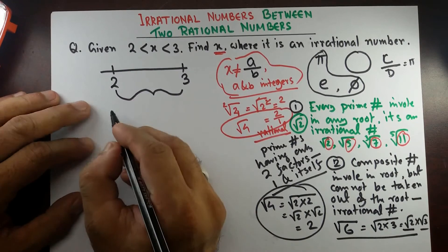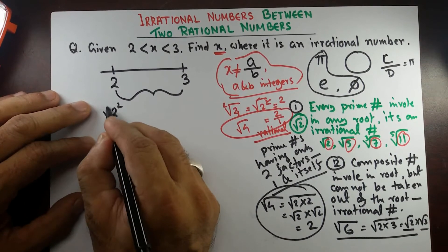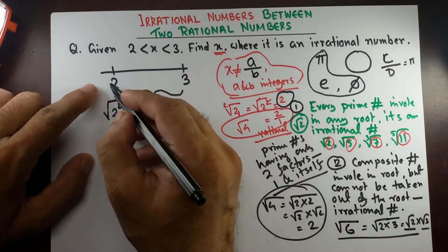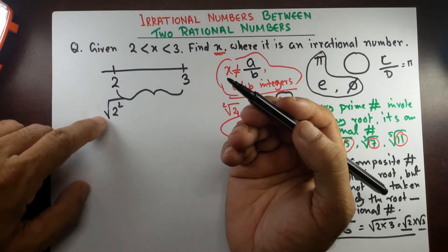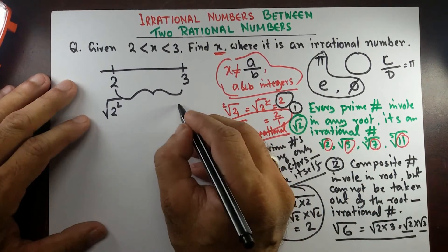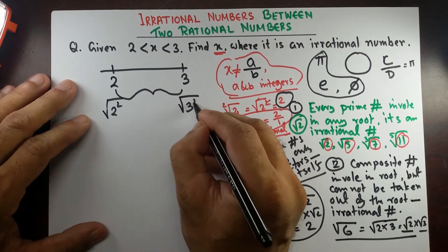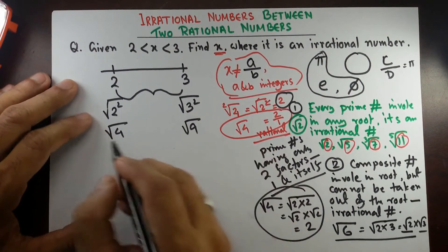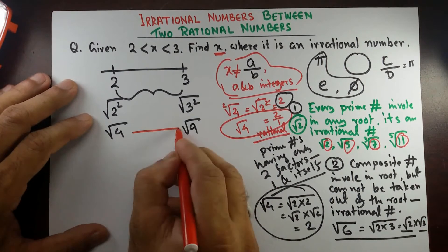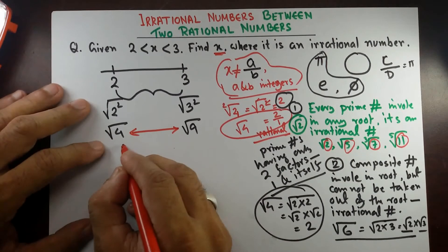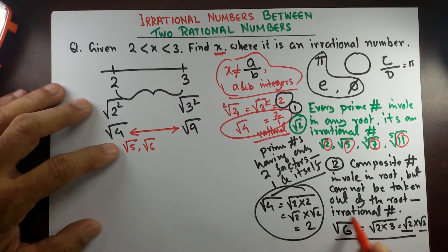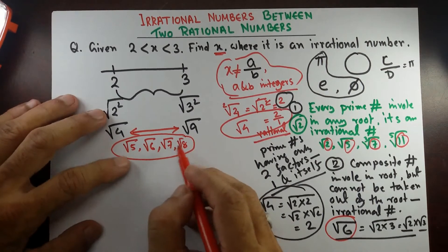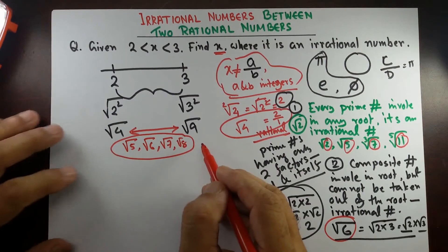Based on this, we can write 2 as the square root of 2 squared, which is square root of 4. Similarly, we can write 3 as square root of 3 squared, which is square root of 9. So, every integer value between square root 4 and square root 9 — think about square root 5, square root 6, square root 7, square root 8 — all these integers inside a square root are irrational numbers.